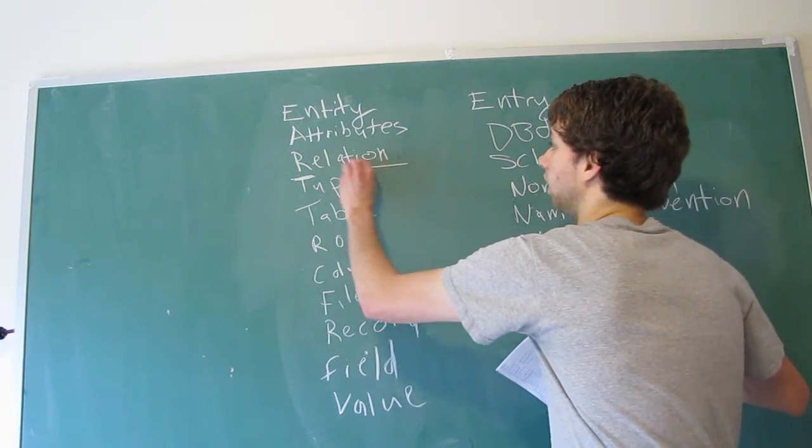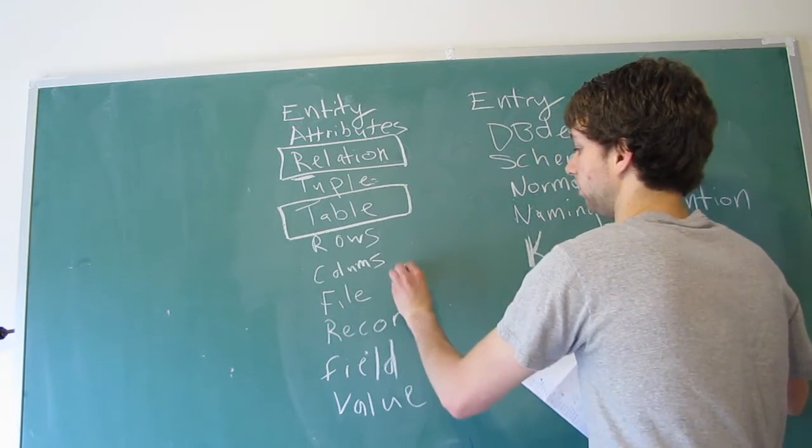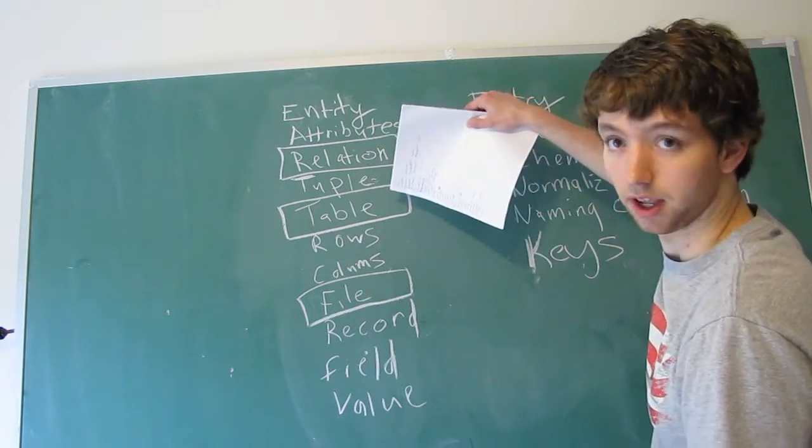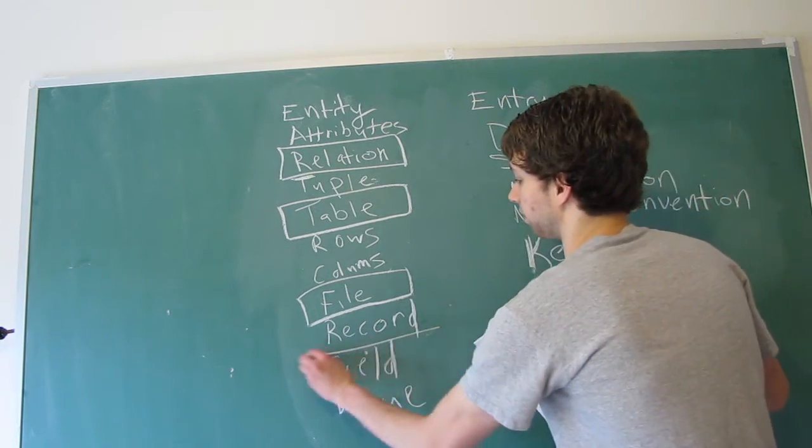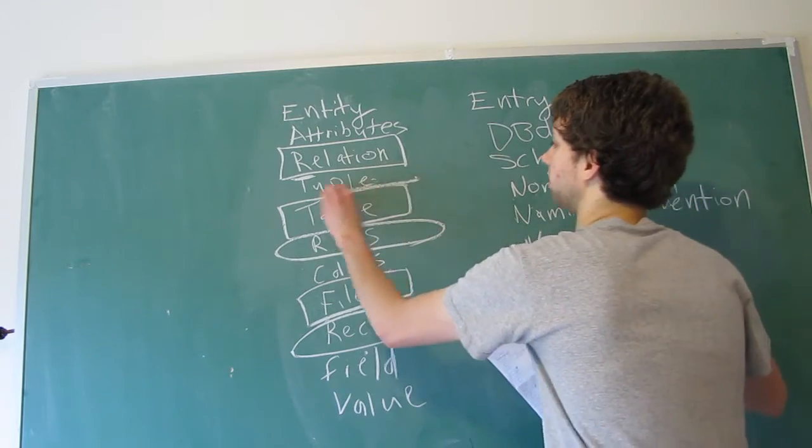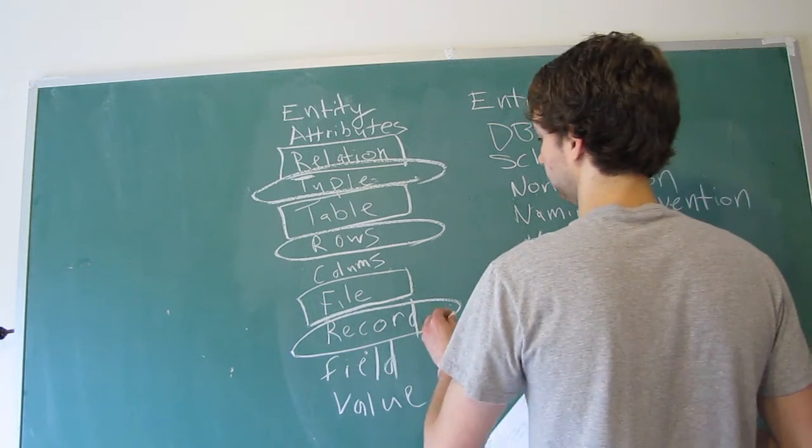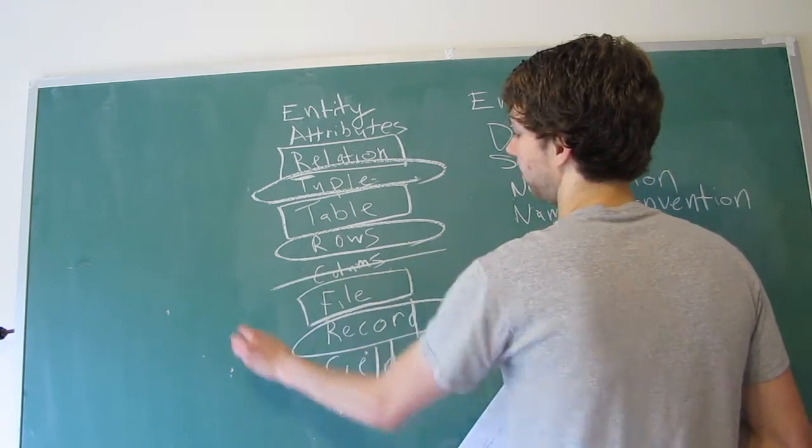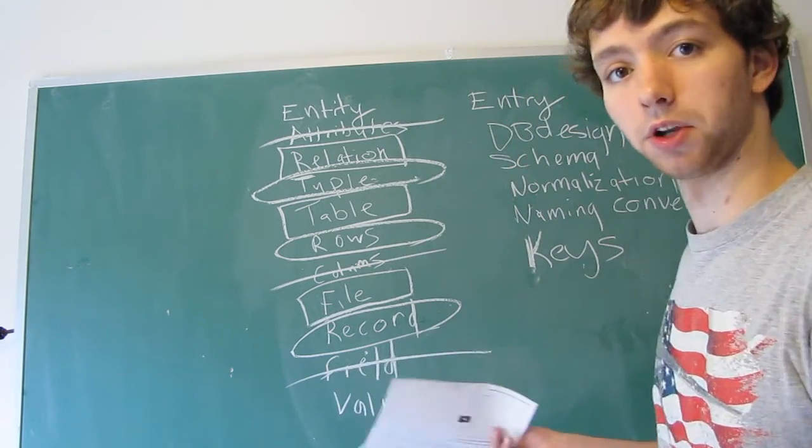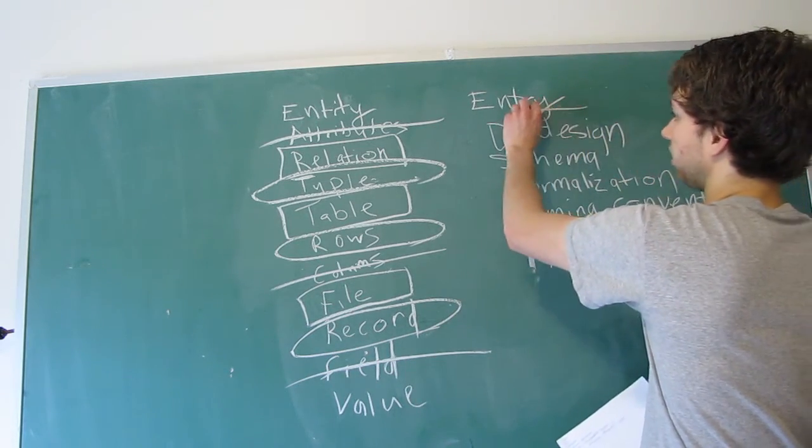For example, we have a relation. And then we have table. And then we have file. So relation, table, and file are all talking about the physical structure, a table, pretty much. Record, I'm going to circle these ones. Record would be a row. So we have a row. And then we have a tuple. These are all talking about rows within a table. And then we have columns. And then we have attributes. And then we have a field. Those are all talking about a column in a table. And also, entry, you can kind of think of that as a row. Because you enter data into the table and you get a new row.